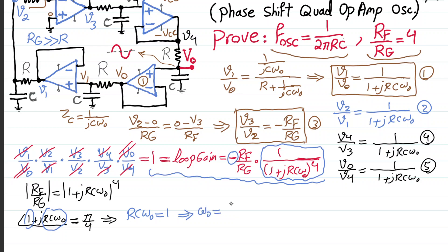Therefore, ω naught is equal to 1 over RC, which means, since f naught is ω naught divided by 2π, it means f naught or f of oscillation should be as simple as 1 over 2πRC, exactly as we wanted. So, that's proven.